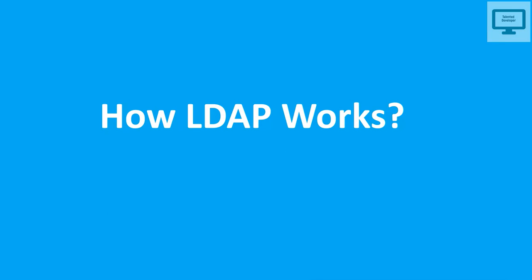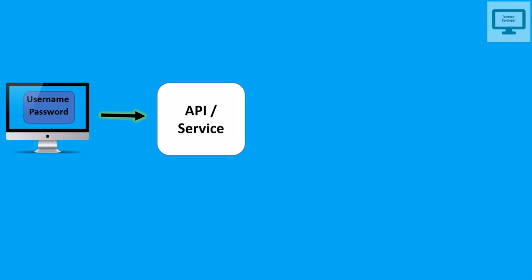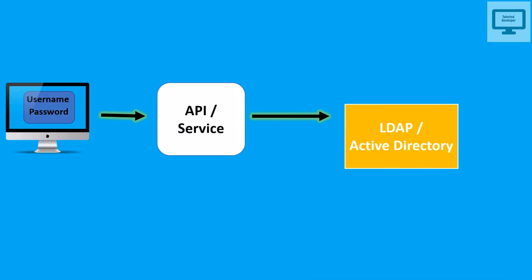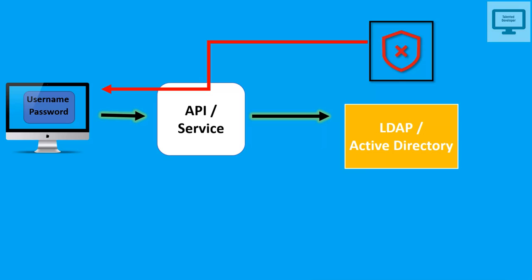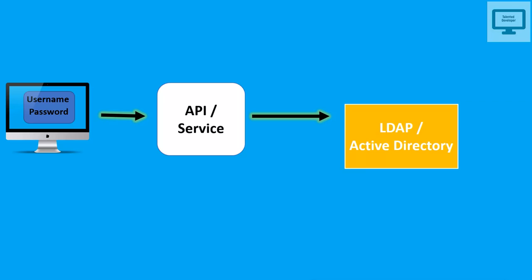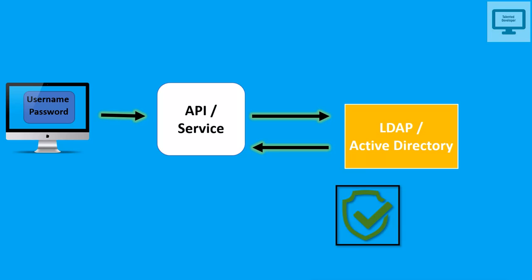How does LDAP work? Suppose you are using a web application and you enter your username and password. It goes to the API and services, which then call LDAP and Active Directory. If your username and password are wrong, you get an error message. If they are correct, you are authenticated and authorized, and the application allows you access.